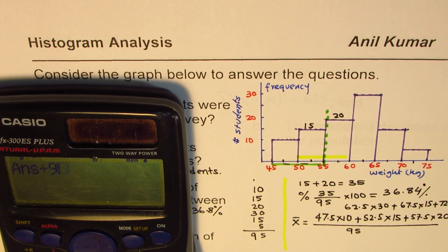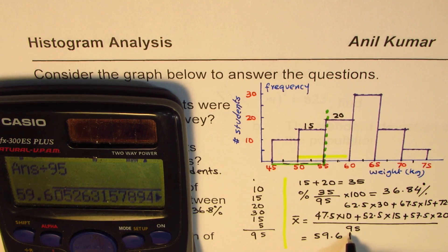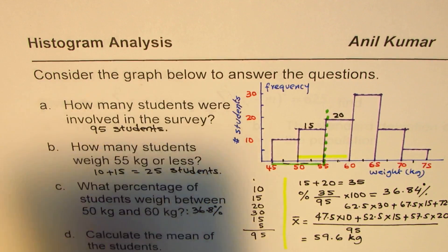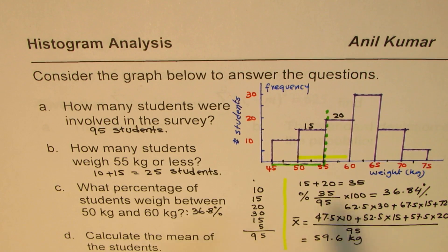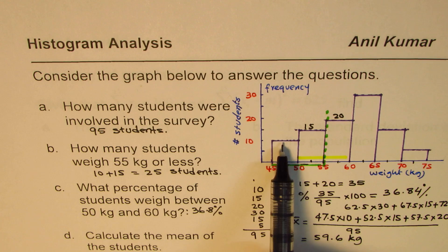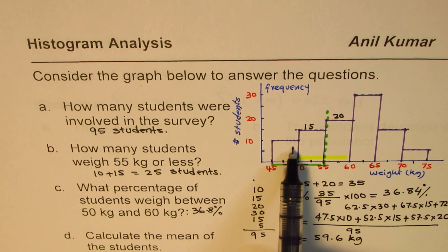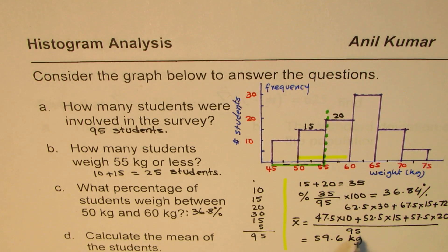We divide that sum by 95 — the total number of students — and we get an average weight of 59.6 kg. That is the mean. So to find the mean: find the midpoint of each group, multiply it by the number of students in that group, add all those products up, then divide by the total number of students. I hope that helps.